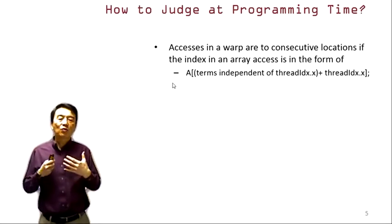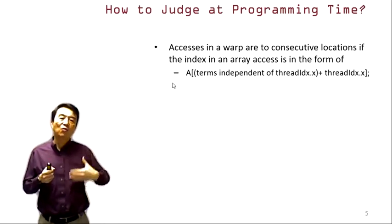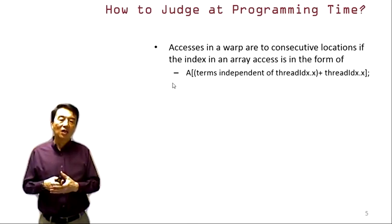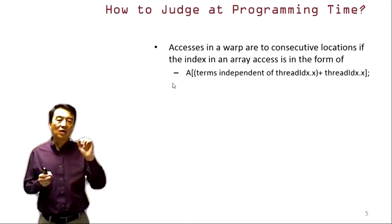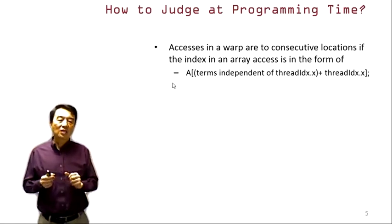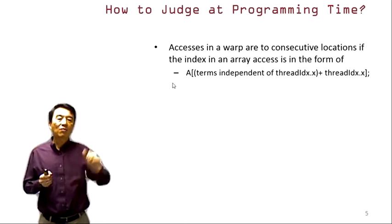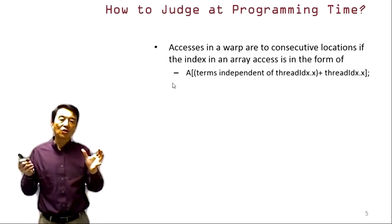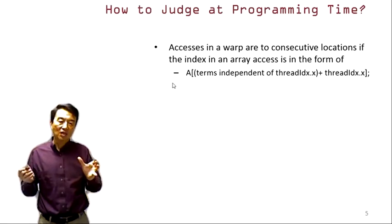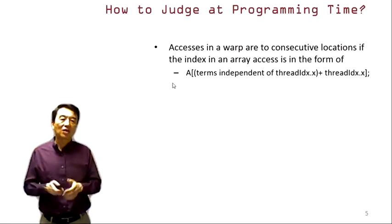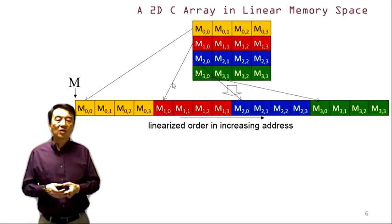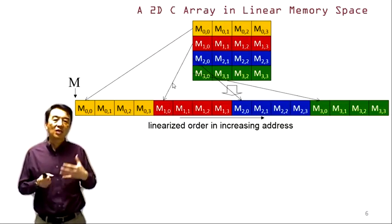Now let's move into practical programming techniques for judging and creating more coalesced accesses. Whenever a kernel has an array access whose index can be decomposed into two parts — a first part independent of threadIdx.x, and a second part that is just threadIdx.x — then this particular access pattern will always be coalesced. Let's go into the details of memory layout to see how this rule works.